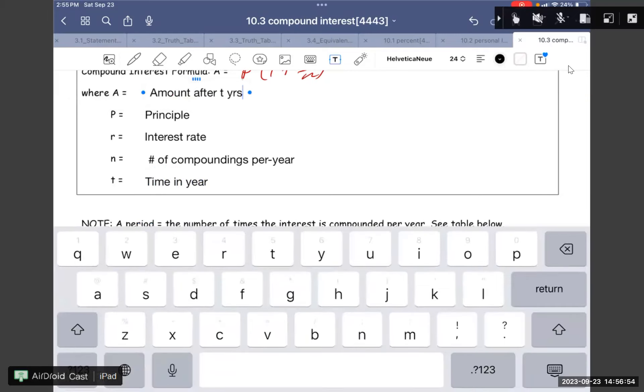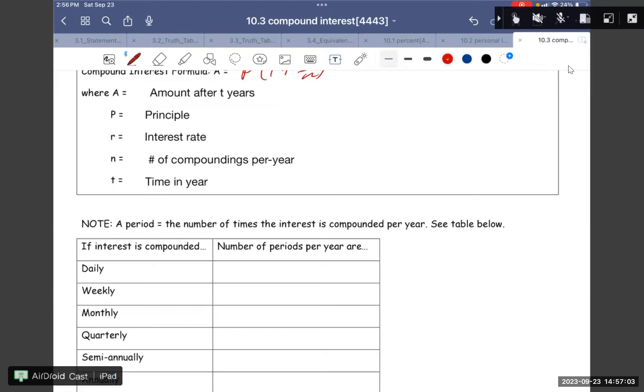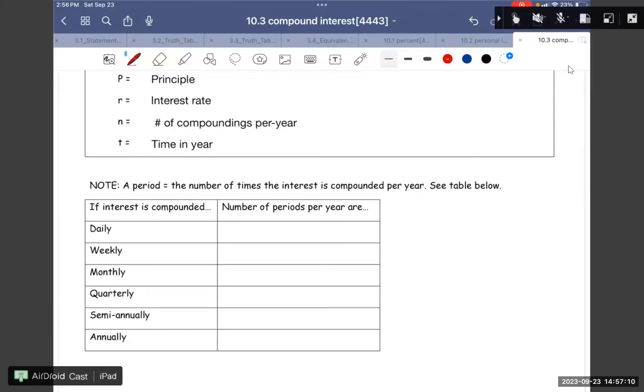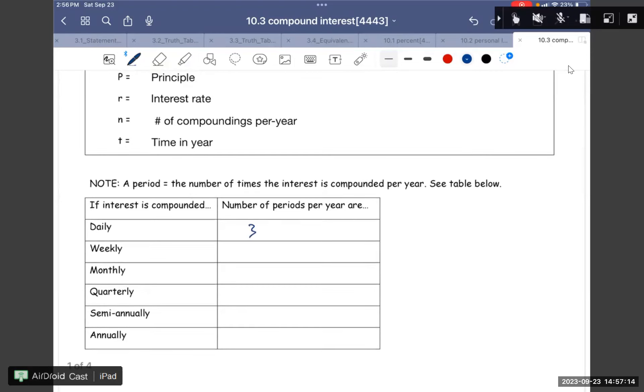Okay, so the note periods: we have daily, so usually we get 360. Weekly is 52 weeks. Monthly is 12 months. Quarterly we have 4. Semi is 2, annual is 1.